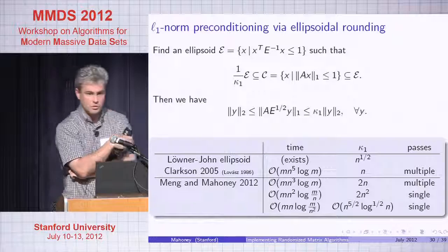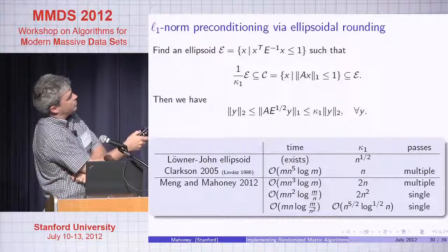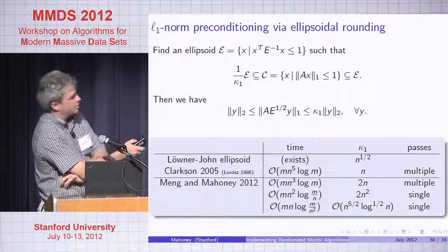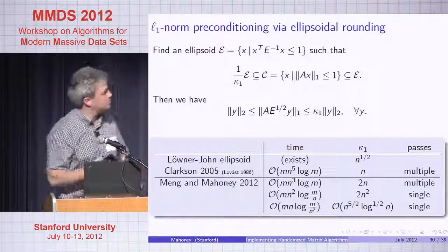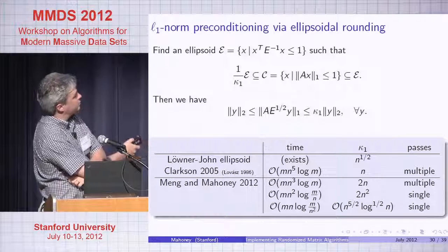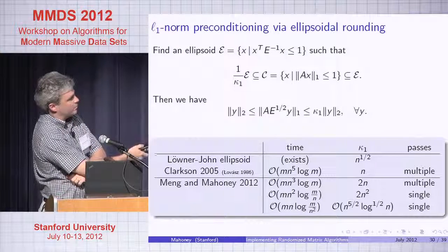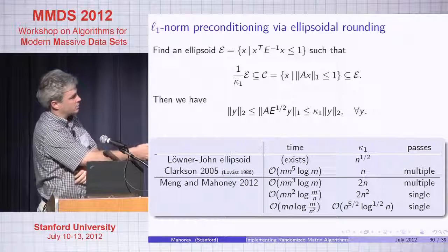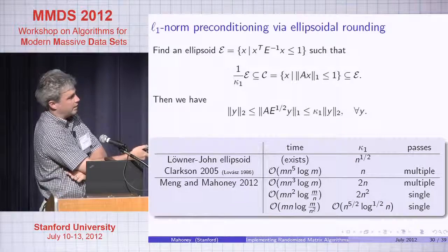For L1 preconditioning — analogous to pivoted QR — you want to find an ellipsoid that sits around the L1 norm ball of the data up to small stretch factors. By the Löwner-John ellipsoid theorem, this exists with condition number equal to the square root of the low dimension. If the low dimension is 100, the condition number is 10; if 1,000, it's 30 — not bad. A naive algorithm takes O(mn^5) time with multiple passes. With Jiyan Meng we have a fast ellipsoid algorithm: cut the tall matrix along the high-dimensional axis, do fast Johnson-Lindenstrauss projections on each piece, paste back together, getting a well-conditioned basis in a single pass over the data.